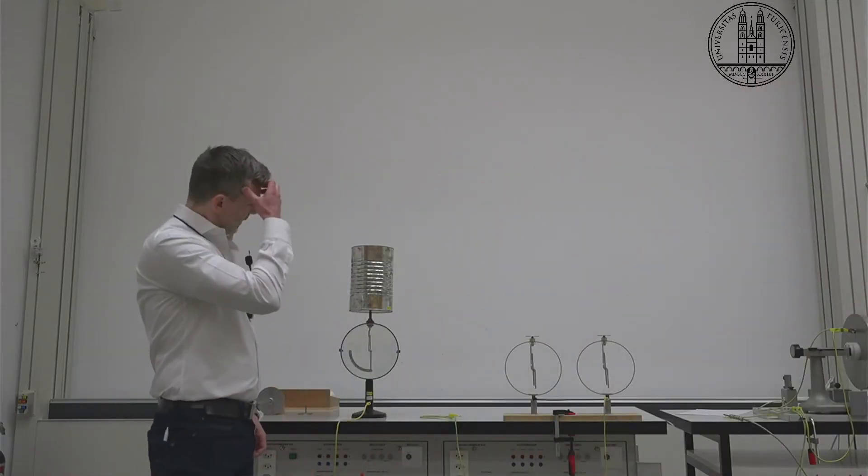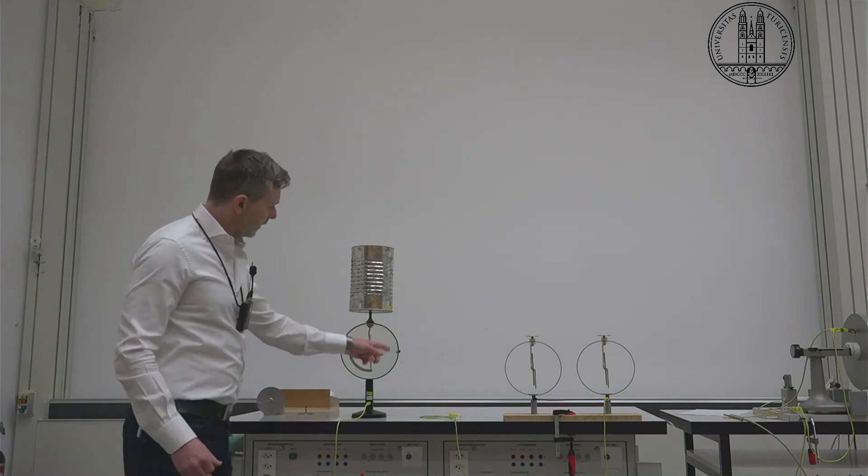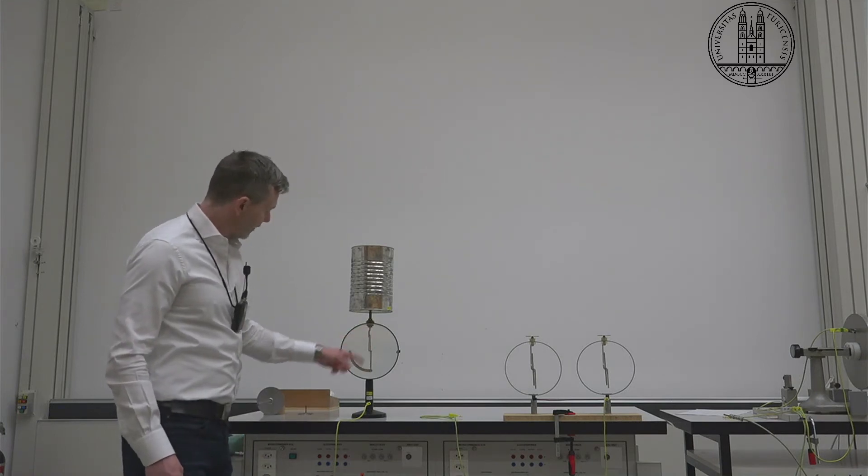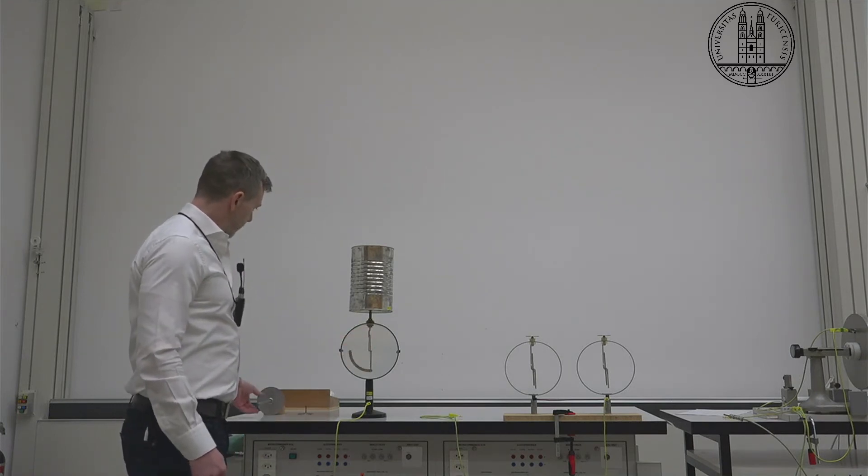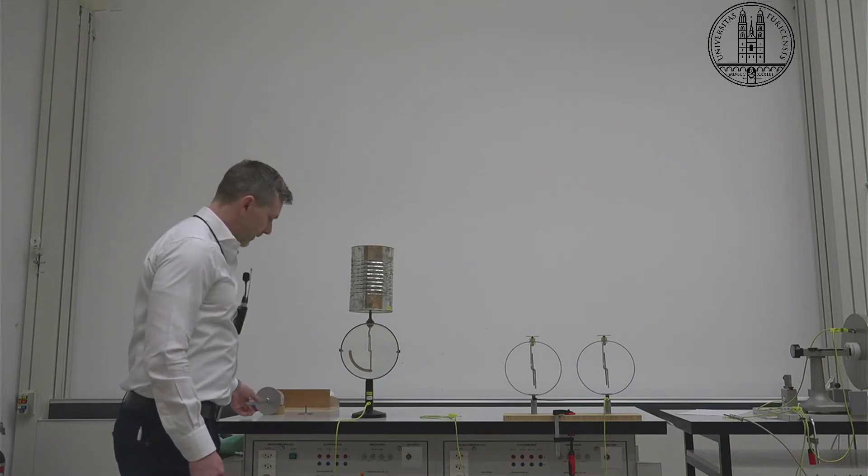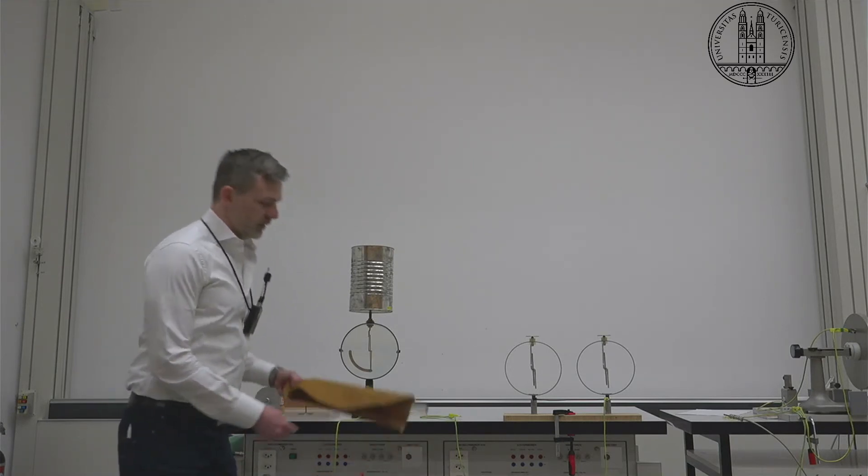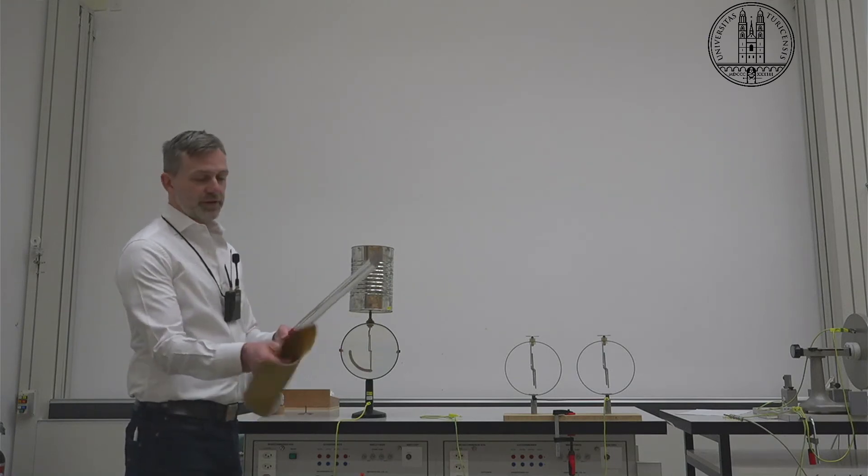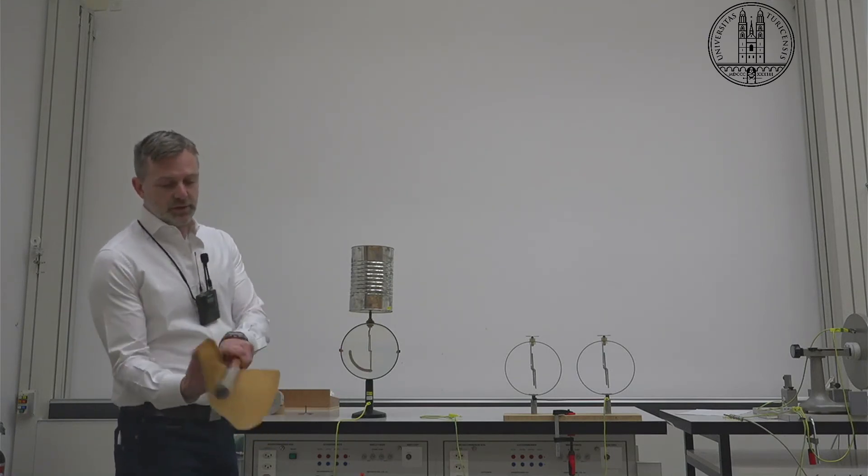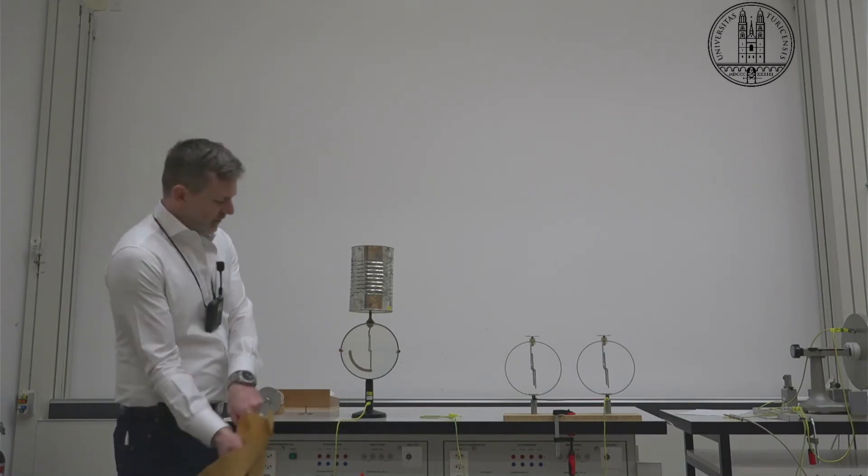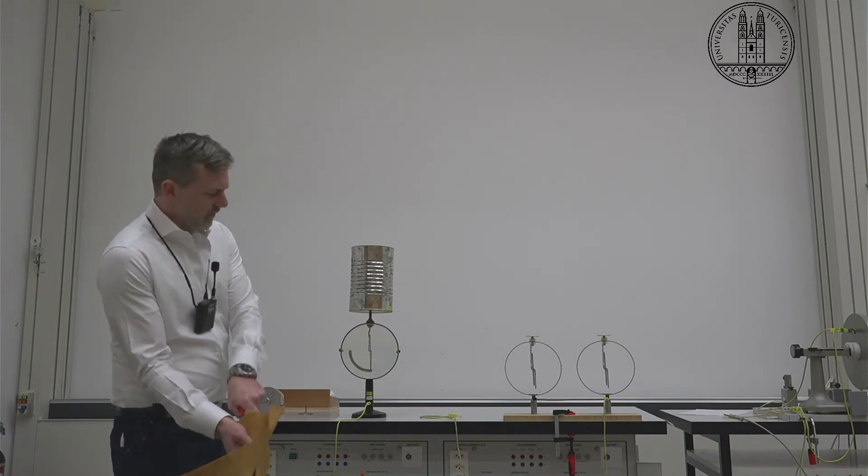So here is our pail and we see this is our electrometer which measures the charge and we'll see how that works in a moment. So first I'm going to charge up this glass rod with positive charges from this sheet of smooth leather.